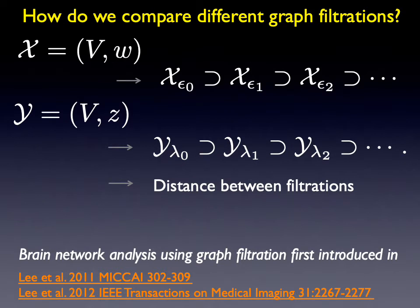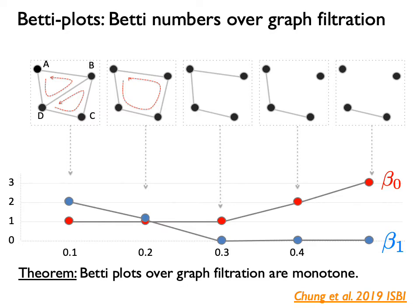Using graph filtrations we can quantify network differences. Given two networks, we construct two graph filtrations and then measure the distance between them. The graph filtration is characterized by the Betti numbers at each filtration value. From a graph consisting of four nodes, we delete one edge at a time forming a graph filtration. Along the way we compute β₀ and β₁ numbers. We call these Betti plots, and we can show that these Betti plots are monotone in the case of graph filtrations.